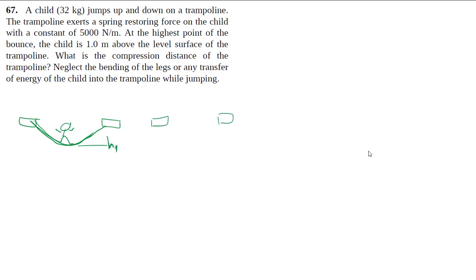And then afterwards your trampoline becomes deformed and you get as high as h2. We can define my h equals zero to be here and positive that away. And then because we have both the gravitational potential energy and elastic potential energy,